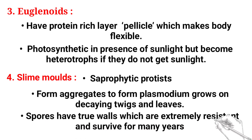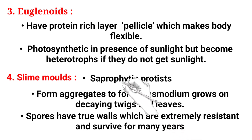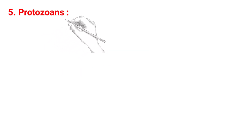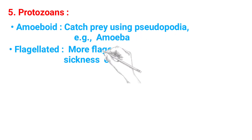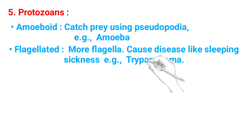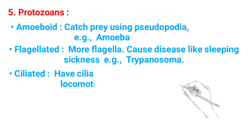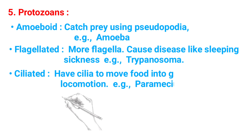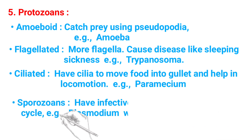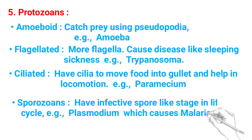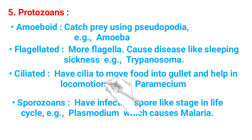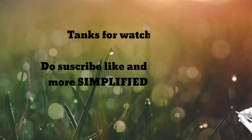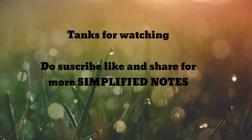Spores of slime molds have true walls which are extremely resistant and can survive for many years. Protozoans: amoeboid protozoans catch prey using pseudopodia — example, Amoeba. Flagellated protozoans have flagella and cause diseases like sleeping sickness — example, Trypanosoma. Ciliated protozoans have cilia to move food into the gut and help in locomotion — example, Paramecium. Sporozoans have an infective spore-like stage in their life cycle — example, Plasmodium, which causes malaria. Thanks for watching — subscribe, like, and share!